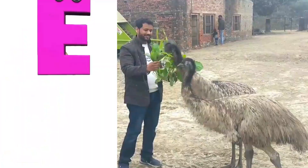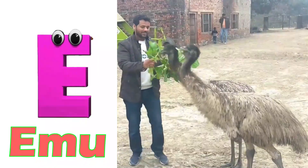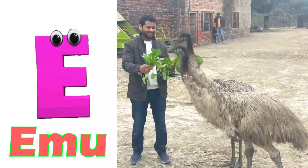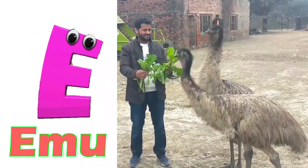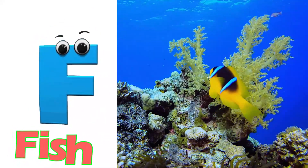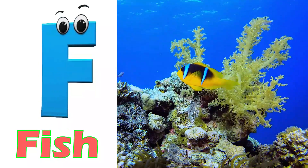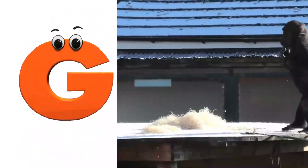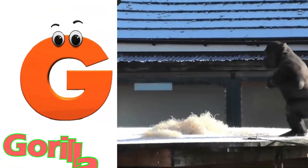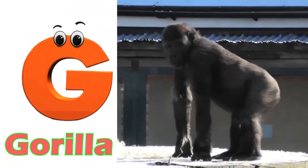E is for emu. Emu. F is for fish. F, F, fish. G is for gorilla. G, G, gorilla.